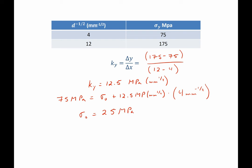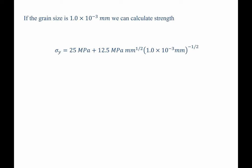Now that we know both sigma-naught and k-sub-y, our Hall-Petch coefficients, we should be able to solve for the yield strength for any arbitrary grain size, which is what we're asked to do in Part B. We're now told that the grain size is 1 times 10 to the negative third millimeters, and they want us to find the yield strength.